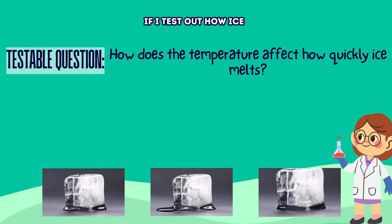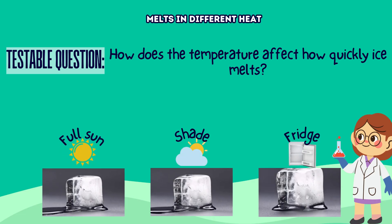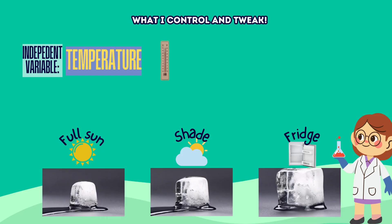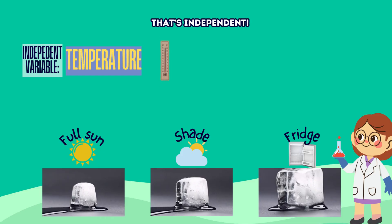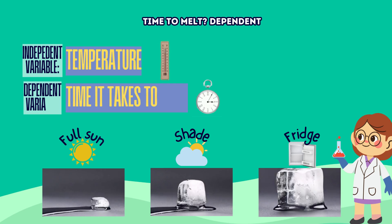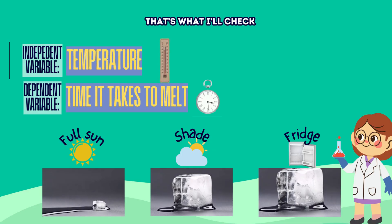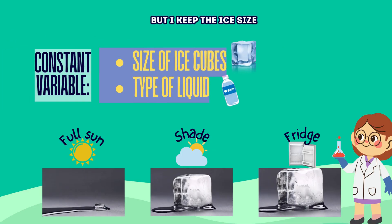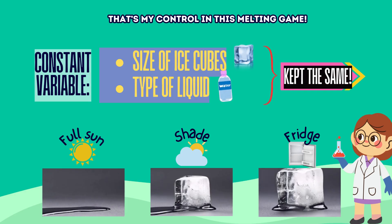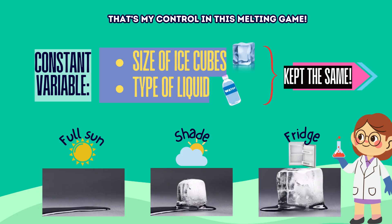If I test how ice melts in different heat, the temperature's what I control and tweak — that's independent, the part I select. Time to melt is dependent, that's what I'll check. But I keep the ice size the same — that's my control in this melting game.